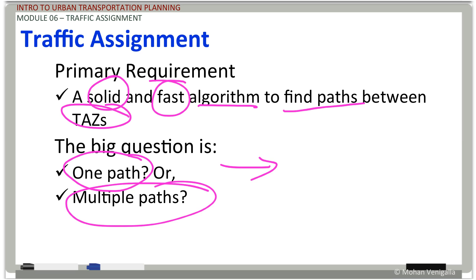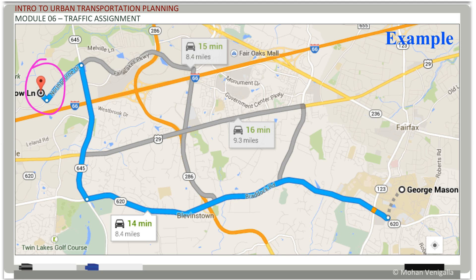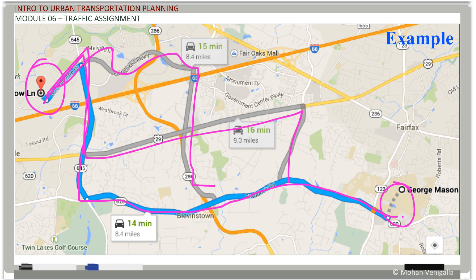My simplest answer is actually we will use only one path at a time. But to put it in context, let's look at a practical situation. I know a guy who lives there and he works at George Mason, and his daily commute route is something like this. When you ask Google, it gave you three different paths. One is 14 minutes, the other one is 15 minutes, and the third one is 16 minutes.